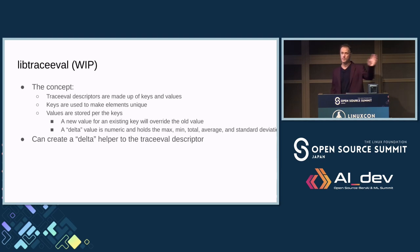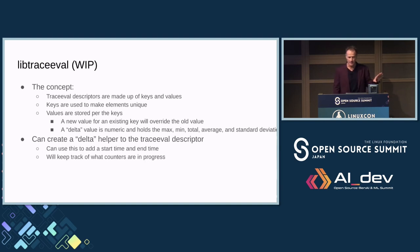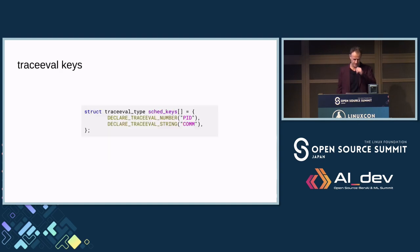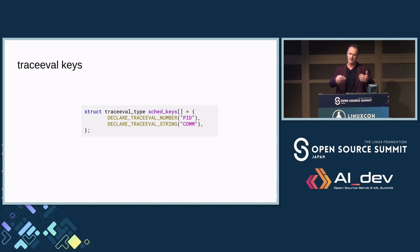You can create a delta helper on top of the descriptor to trace via other keys. This gives you a way of adding a start time and an end time, then tracking counters and progress. To create the key — this is where creating a new library with a new API is hard. I rewrote APIs over and over. This is why I haven't released it yet — I want it to be a nice API before it's fully released.